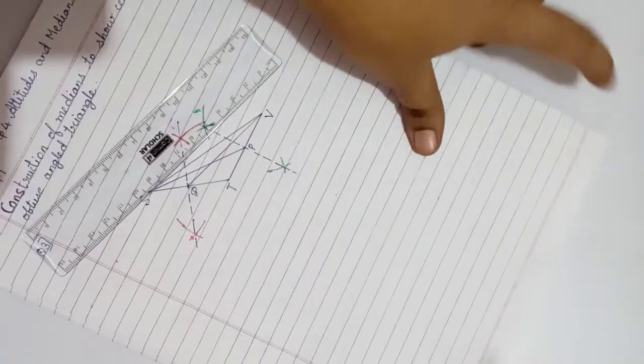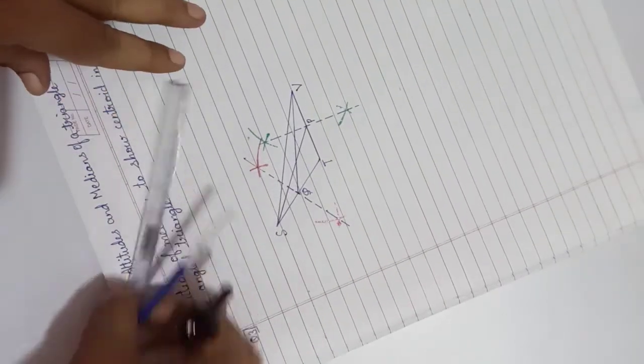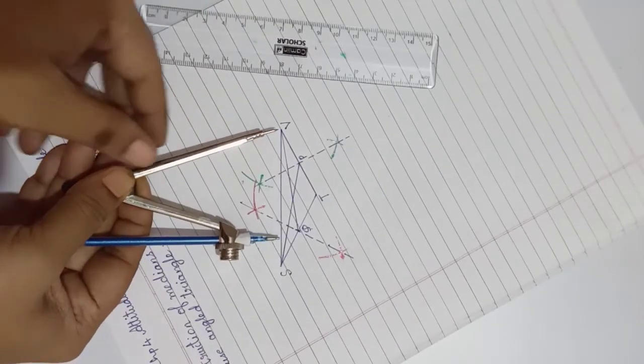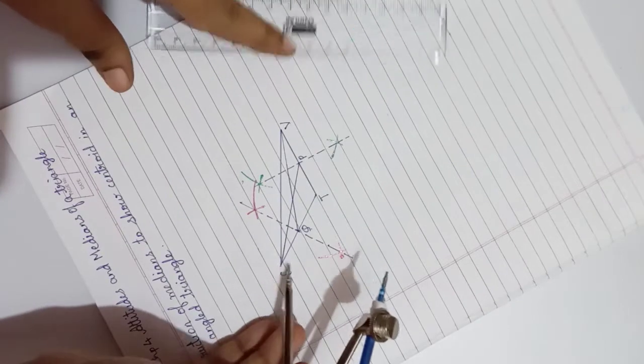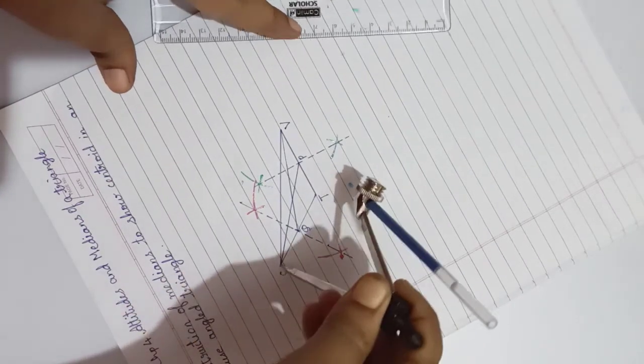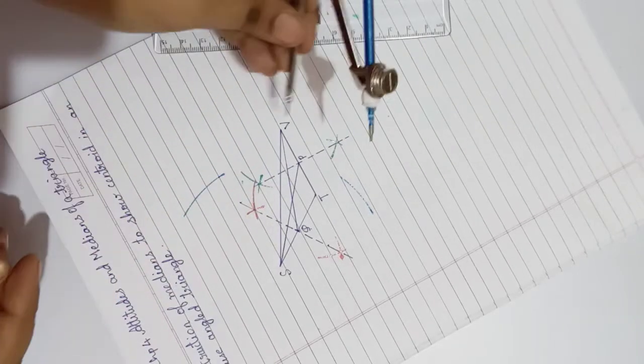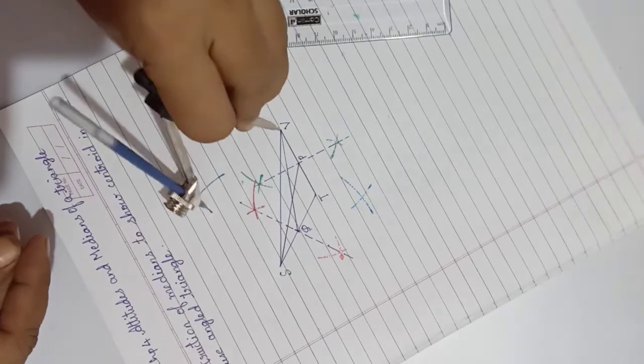Next, we need to draw perpendicular bisector for SV. Take more than half size in the rounder. Draw the arc from point S up and down, and intersect those arcs from point V up and down.